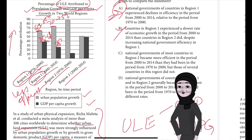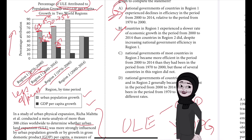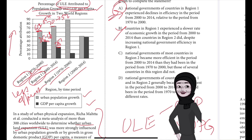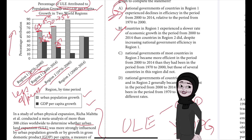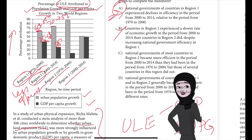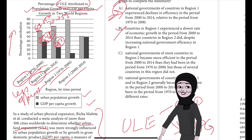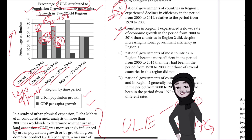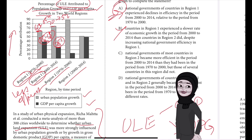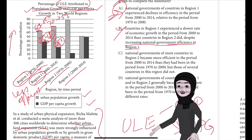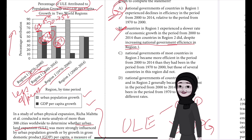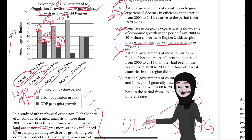Choice B is incorrect because neither the graph nor the text gives the regions' relative levels of economic growth, nor what effect Meta et al. would expect such growth to have. Furthermore, Meta et al.'s proposal suggests that Region 1's decline in the percentage of ULE attributed to GDP growth per capita — from 35 to 40 percent in 1970–2000 down to just 25 percent in 2000–2014 — would suggest decreasing, not increasing, government efficiency over this time. So B is incorrect.